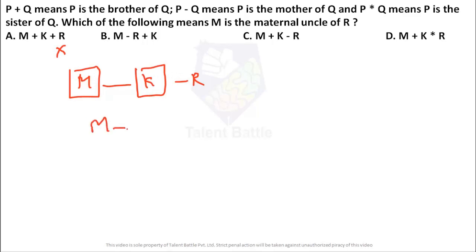Check the second option, M minus R plus K. Now what is the meaning of minus? P minus Q means P is mother of Q. So in this case M is mother of R. Since she is mother I have drawn a circle. So you can draw a circle for female. Okay, to just the simple notation general notations. Next plus K means R is the brother of K. So R is the brother of K. So what they have asked, M should be the maternal uncle of R. As you can check, M is anyhow female. So she cannot be a maternal uncle. So that is not the correct answer.